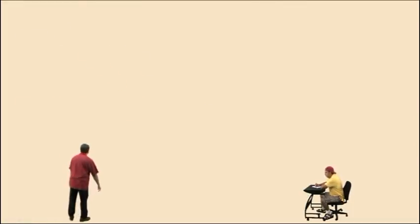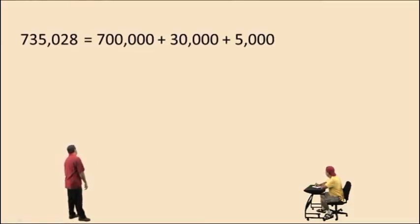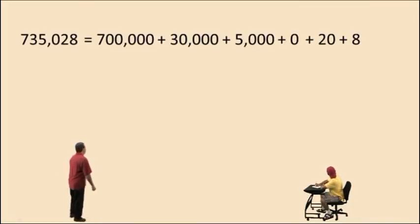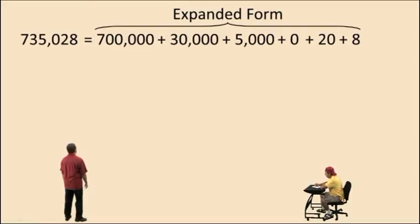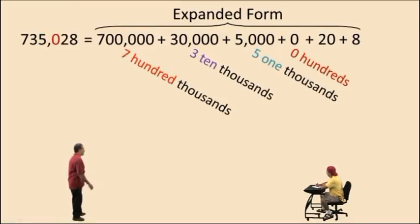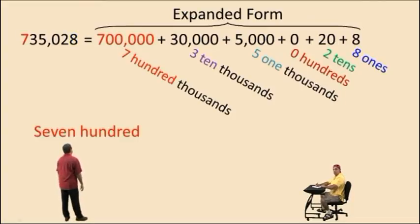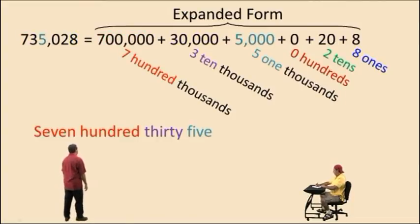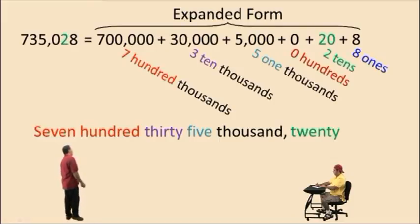Let's try another one, Charlie. In expanded form, this is 700,000 plus 30,000 plus 5,000. We have zero in the hundreds place, so we put a zero to represent that place value. We have two tens, so we write 20, and we have eight ones. And why do we read it that way? Because we have seven hundred thousands, three ten thousands, five one thousands. We had zero hundreds, but we did have two tens and eight ones. How do we say that number correctly? Seven hundred thirty-five thousand twenty-eight, there you go.